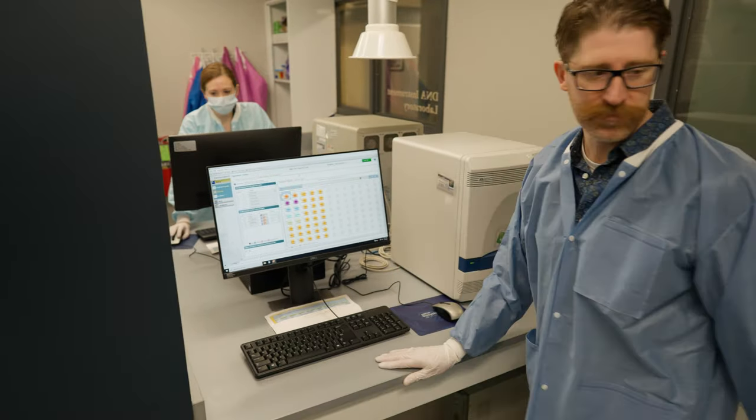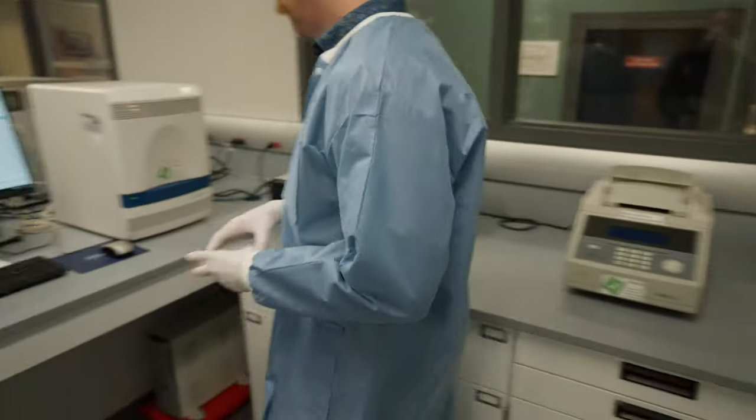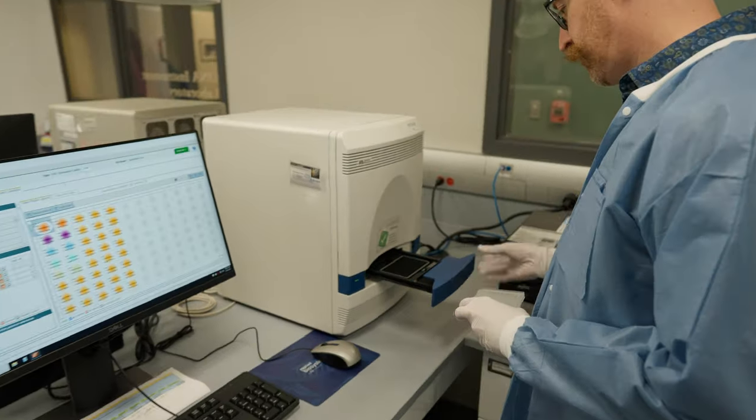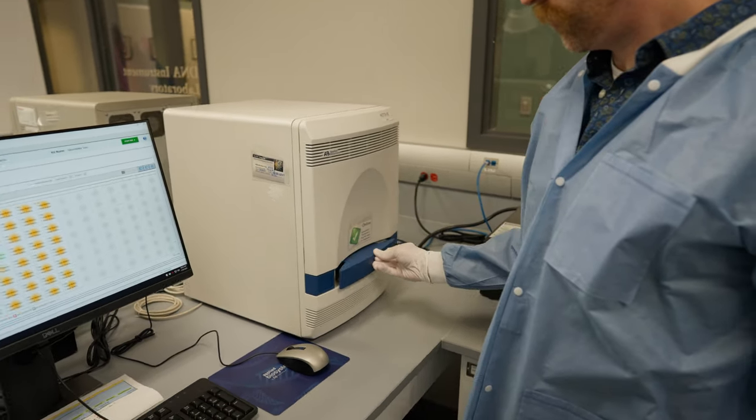As the quantitation reagents copy certain areas of the DNA molecules in the sample, a fluorescent signal is emitted. The relative brightness of the signal is measured by the instrument and is converted into an estimate of how much DNA is present in each sample.